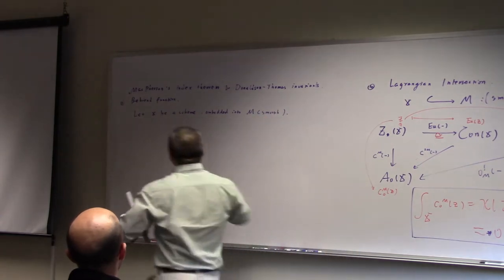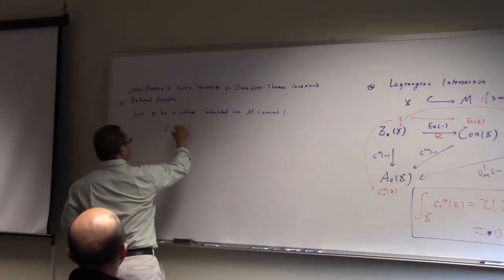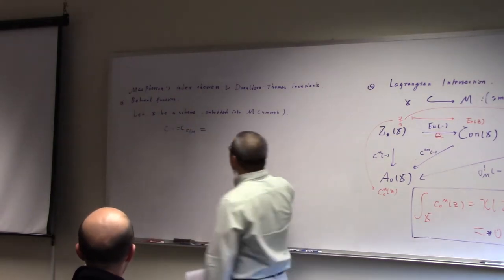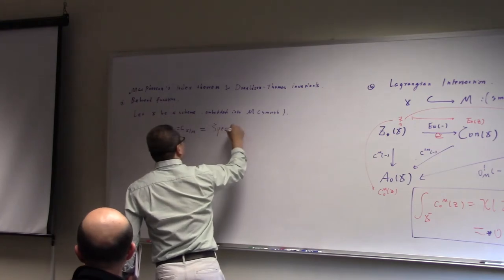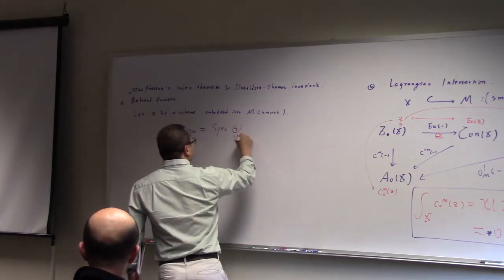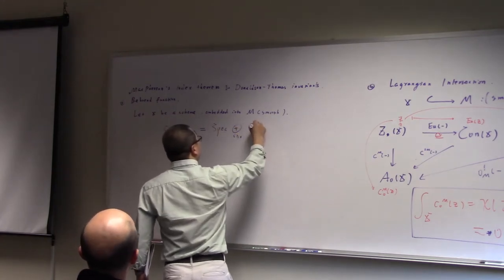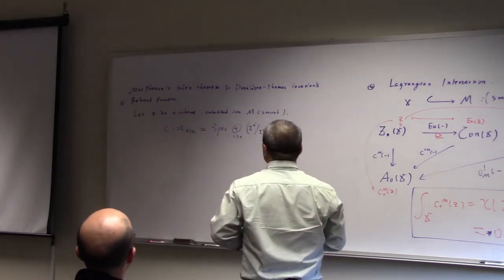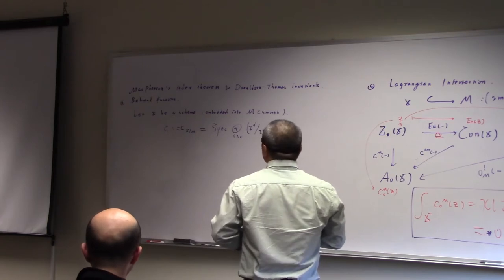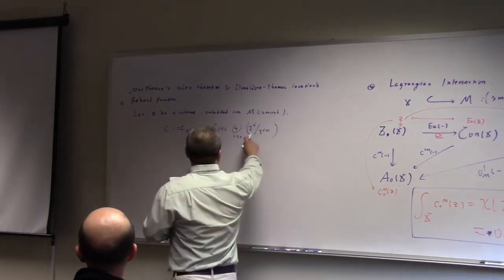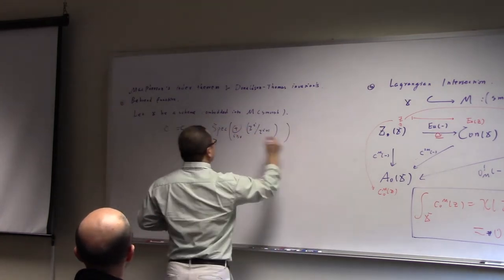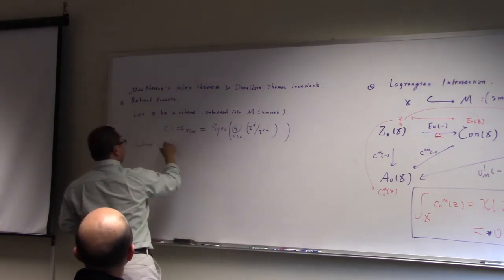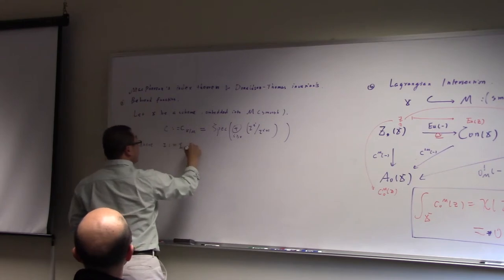Now you take the normal point of X at a time. So by definition, this is the spectrum sum — I from zero to infinity — I over... Right? So this is a gradient O_X module. This one is a spectrum. So here, you can use I equal to... I equal to... It is the shift — the ideal shift.